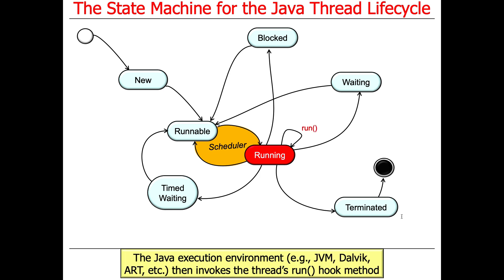Once in the RUNNING state, things can actually start to happen. This invokes the run hook method that you define — either by passing a Runnable to the constructor, by overriding the run method in the thread, or by creating a new Runnable object. The Java execution environment — whether the JVM, Dalvik on earlier Android versions, or ART on later versions — invokes the thread's run hook method. Now you're running in application user land, where actual computations of interest to the program are done.